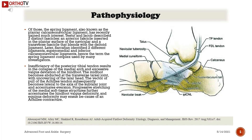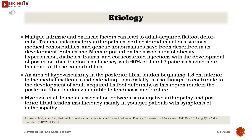Sarrafian identified two different ligaments — superomedial and inferior calcaneonavicular ligaments — hence the term 'spring ligament complex' used by many investigators. Insufficiency of the posterior tibial tendon results in collapse of the medial arch and excessive valgus deviation of the hindfoot. The midfoot becomes abducted at the transverse tarsal joint without covering of the talar head. The vector of pull of the Achilles tendon subsequently becomes lateral to the axis of the subtalar joint and accentuates eversion.